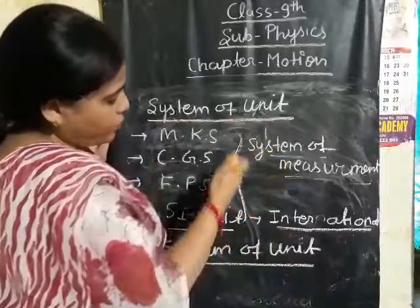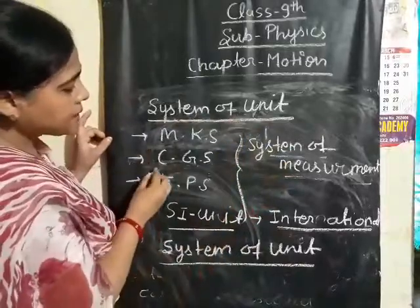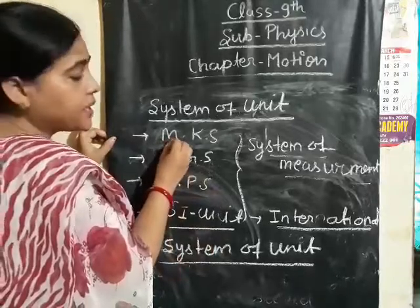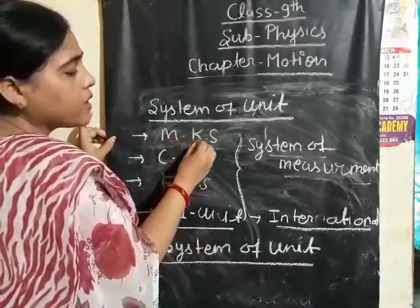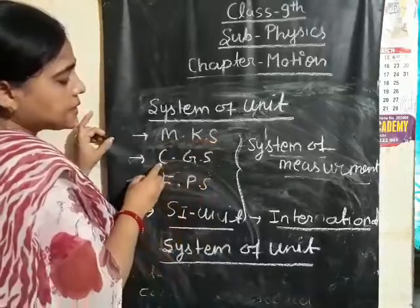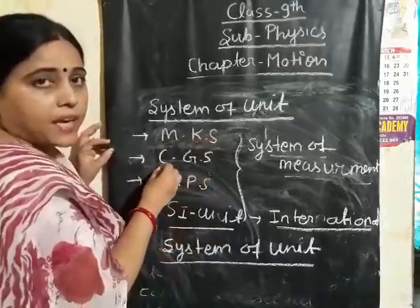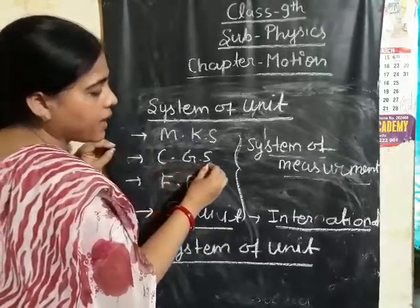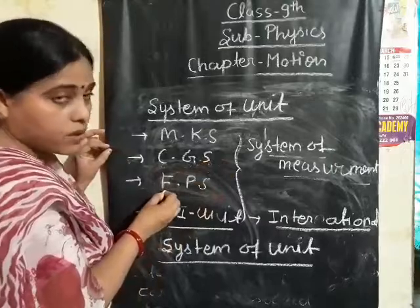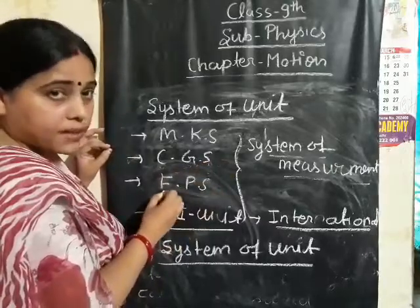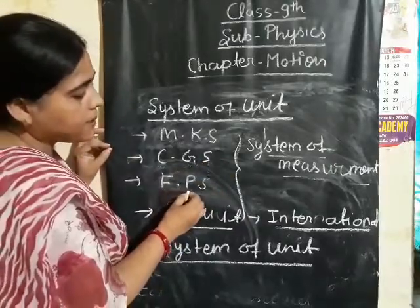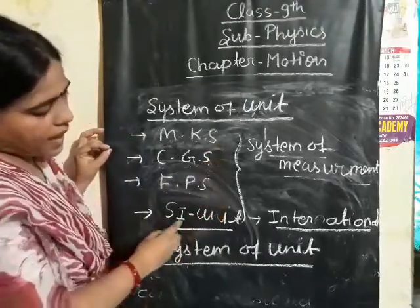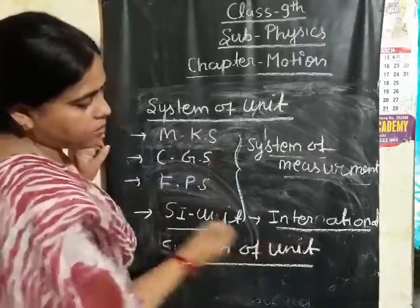There are four systems of units. MKS: meter for length, kilogram for mass, second for time. CGS: centimeter for length, gram for mass, second for time. FPS: foot for length, pound for mass, second for time. And the fourth is SI unit, which is called the International System of Units.